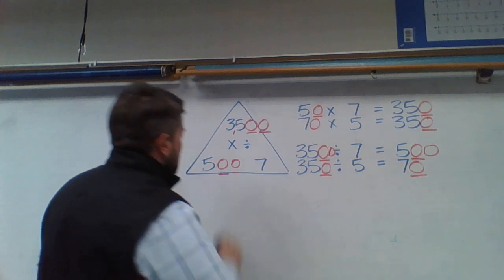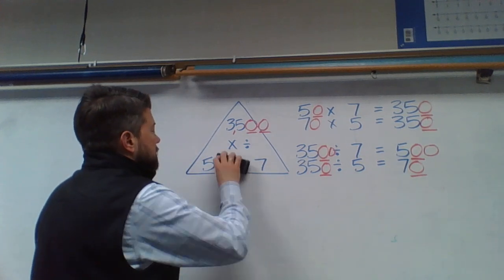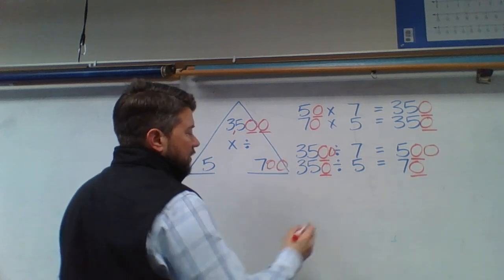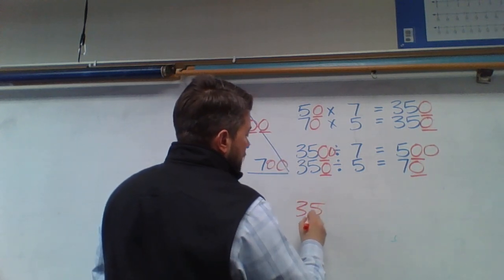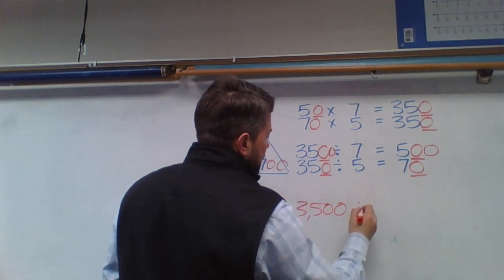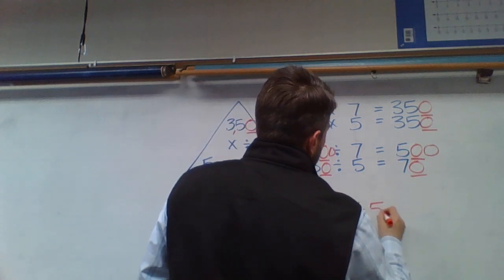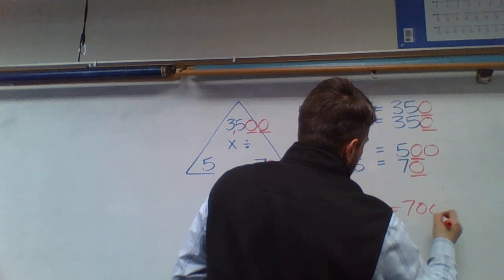Or I can put both 0s behind the 7, making that 700. So my new problem would be 3,500 divided by 5, which would give me 700 in each group.